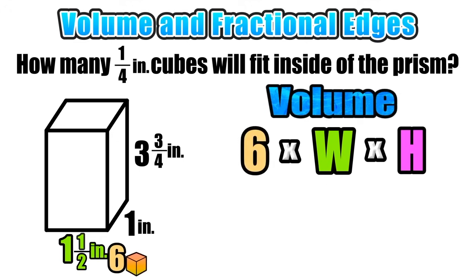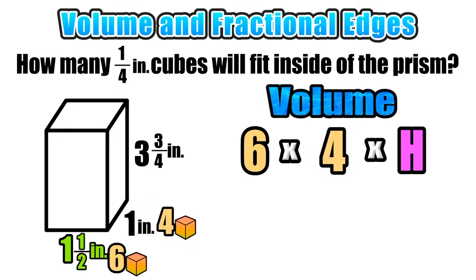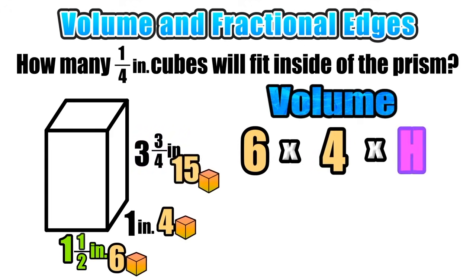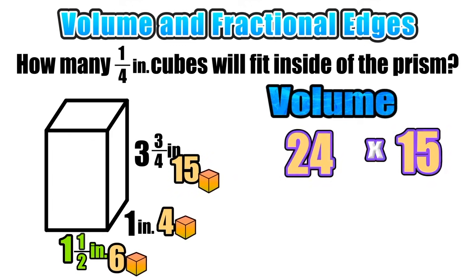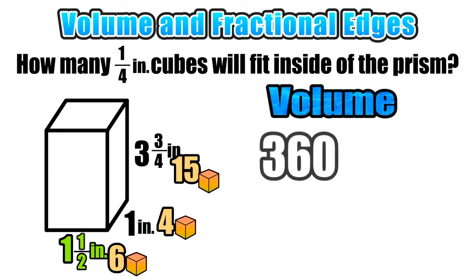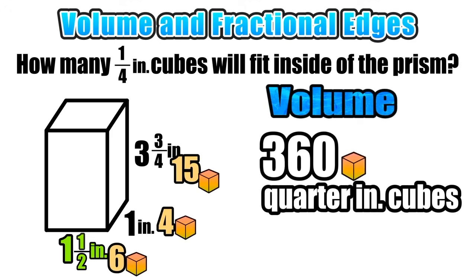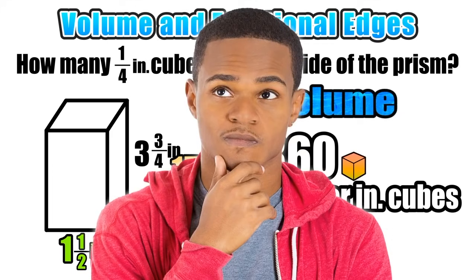Since our width is one inch, it would take four one-quarter inch cubes to cover that width, so our width in terms of quarter-inch cubes is four. Applying the same logic to the height, which is three and three-quarters of an inch: that is equivalent to fifteen one-quarter inch cubes, so we replace our height with fifteen. To find the volume, we multiply 6 times 4, which is 24, then multiply by 15, giving us a volume of 360. It would take 360 one-quarter inch cubes to fill the entire prism.